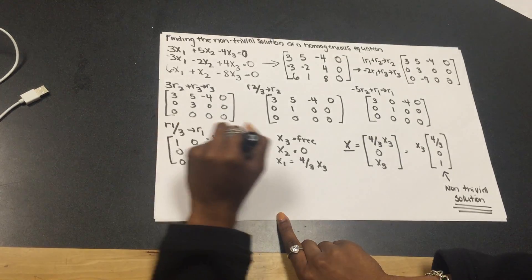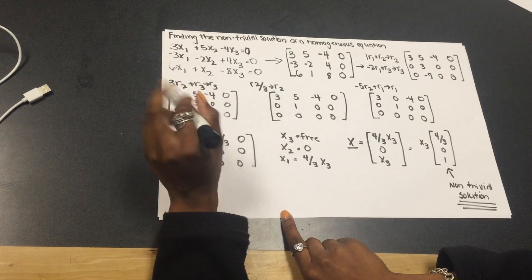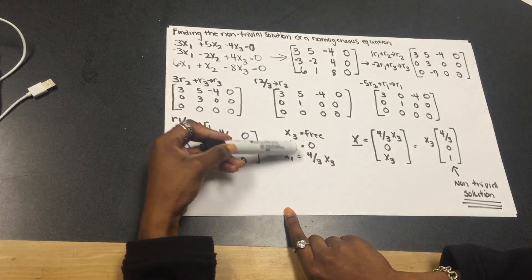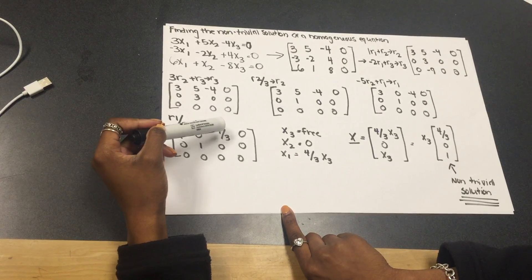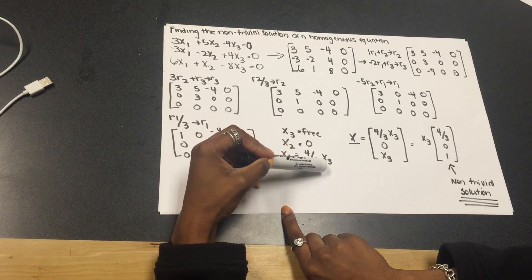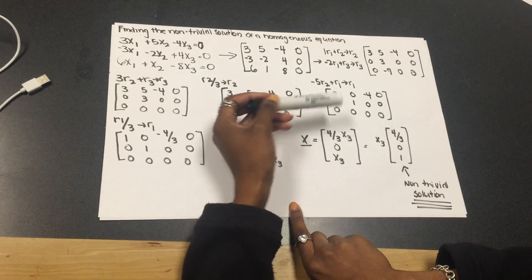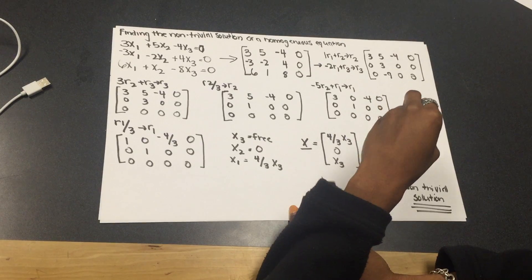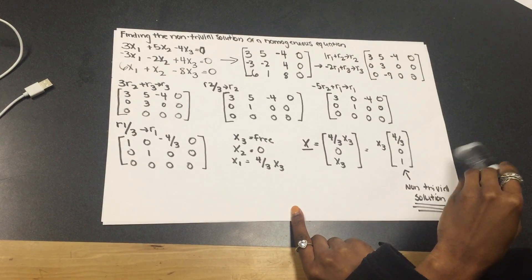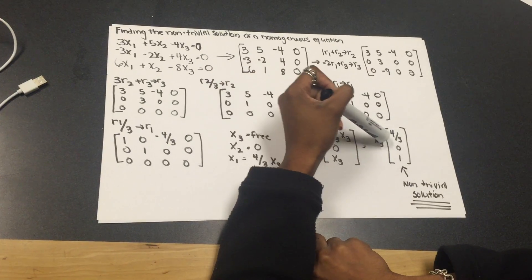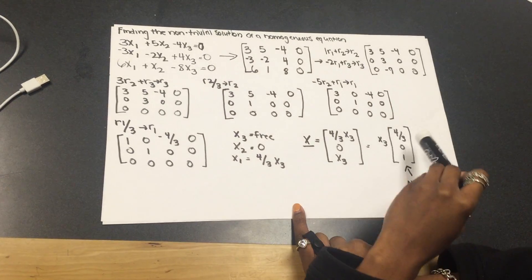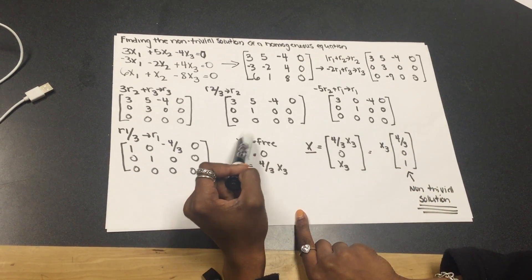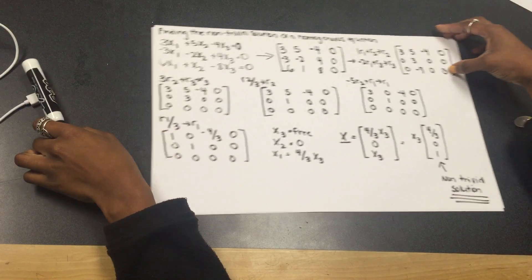Now, I can find a non-trivial solution because I have the free row, and then I have this solved. So, x3 is free, x2 is 0, and x1 is equal to 4/3 x3. Then, you make the coefficient matrix. So, you do x3 times 4 over 3. That's for x1. x2 is equal to 0, and x3 is free. So, you put a 1 here. So, that's your non-trivial solution.